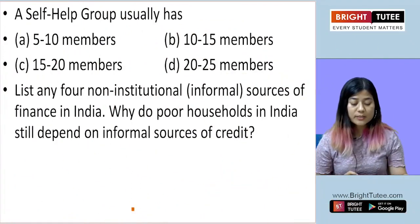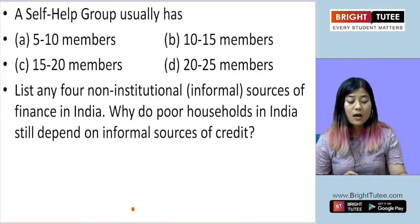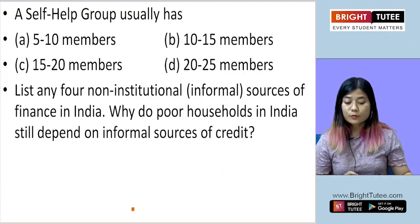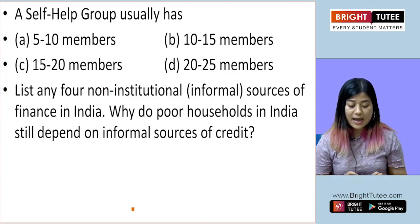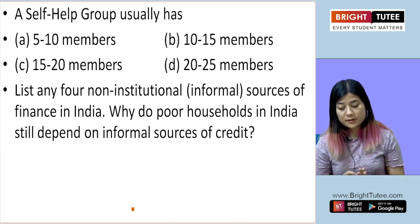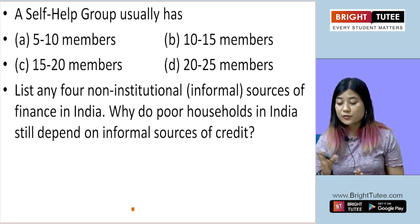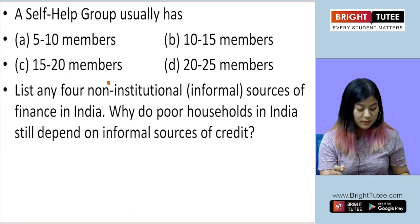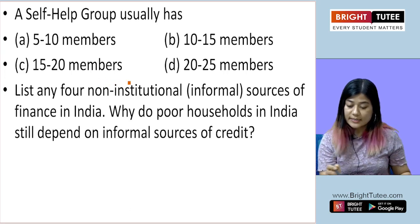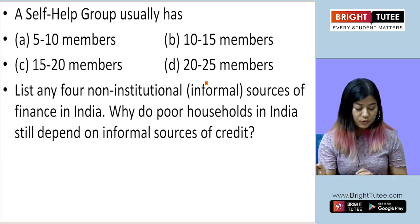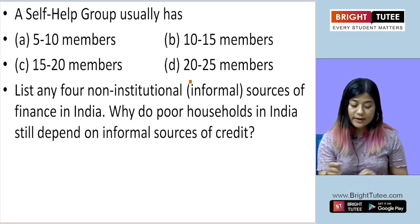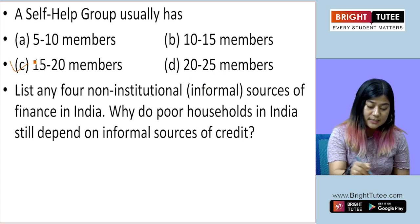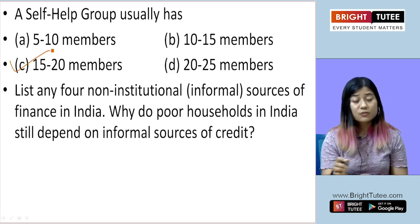The first question asks: a self-help group usually has — a) 5 to 10 members, b) 10 to 15 members, c) 15 to 20 members, or d) 20 to 25 members. The correct answer is c) 15 to 20 members.